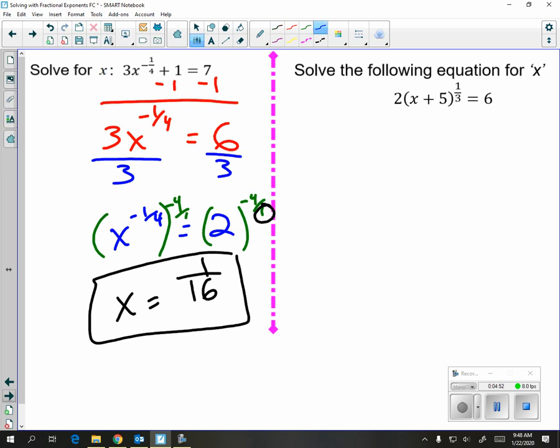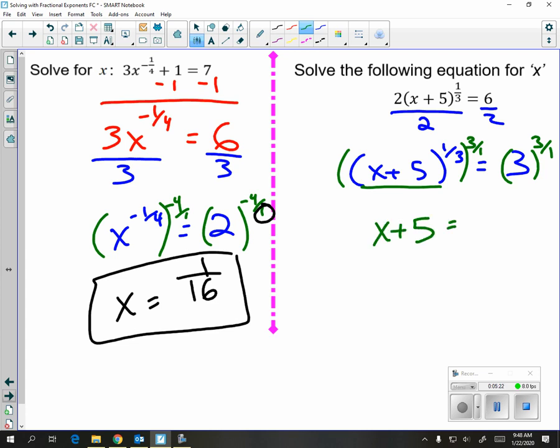For the next one, you're going to start off by dividing by 2. Now, x is not by itself, but this is your base. And the entire base is by itself. So you can go straight to raising both sides to the reciprocal power. Your exponents are going to undo each other. And you're going to get x plus 5 equals 3 to the third, which is 27.